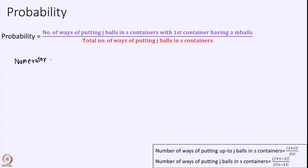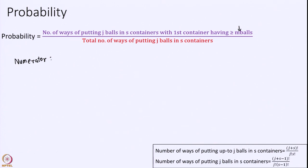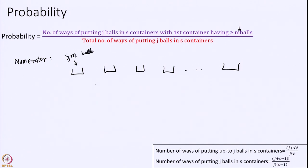The numerator is the number of ways of putting j balls in s containers with the first container having more than or equal to m balls. This is a puzzle — you can pause and try to calculate this on your own. I have s containers, the first one should have more than or equal to m balls, and I have a total of j balls. How many ways can I arrange this so the first container has at least m balls?